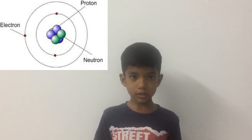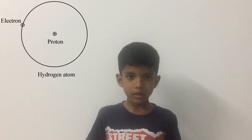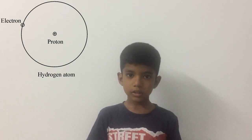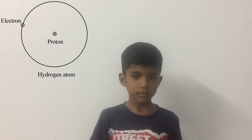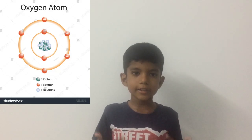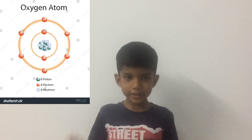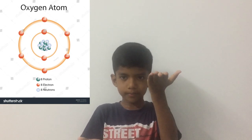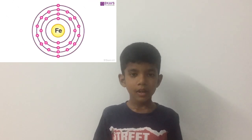Let's see the structure of different kinds of atoms. Starting from the hydrogen atom: there's only one proton, no neutron, and only one electron orbiting it. But the oxygen atom has eight protons and eight electrons and neutrons. Comparing these two, this is how they differ. Let's go to iron atom — Fe means iron.